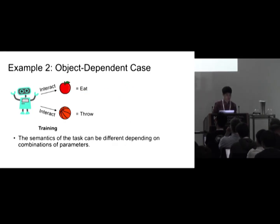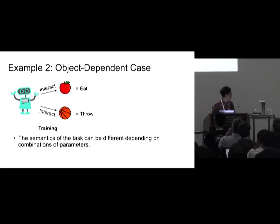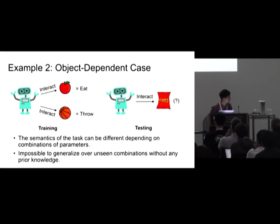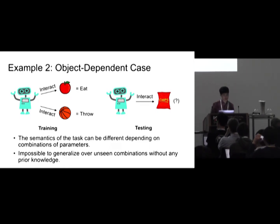For example, we can have a more complex generalization scenario where, given 'interact with apple', the agent has to eat the apple, and given 'interact with ball', the agent has to throw the ball. In this case, the semantics of 'interact' can be different depending on the target object. So if we give a new target object during evaluation like 'chips', it's impossible for the agent to generalize over this unseen combination without any knowledge about this new task.